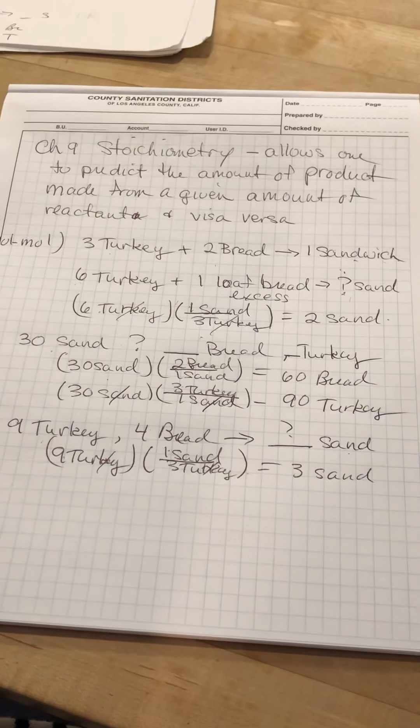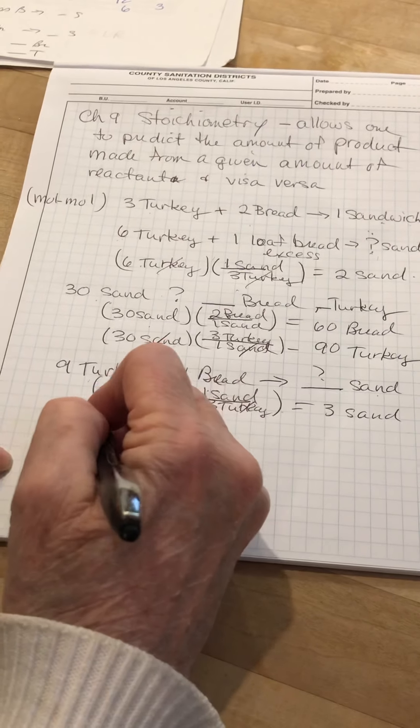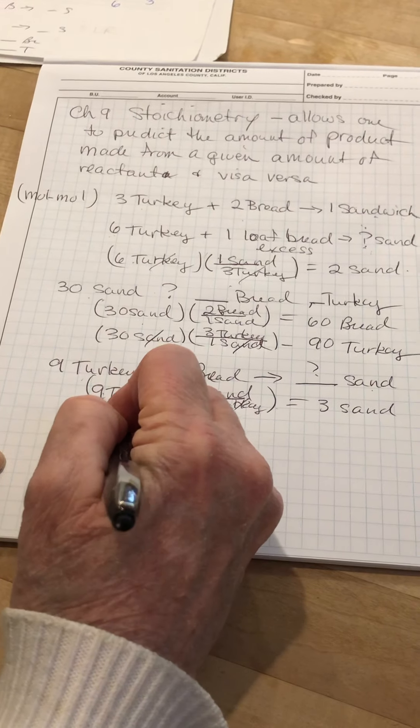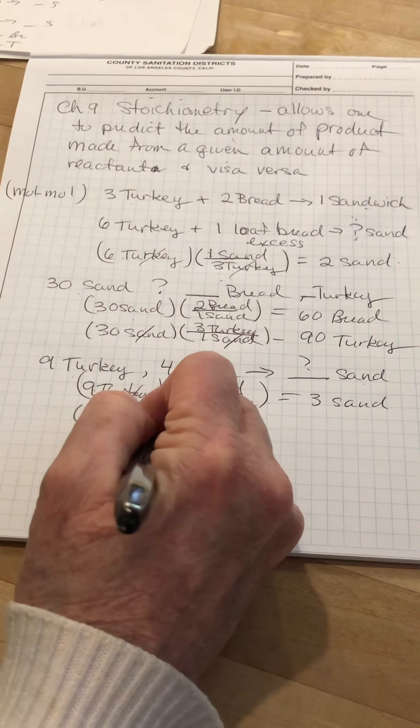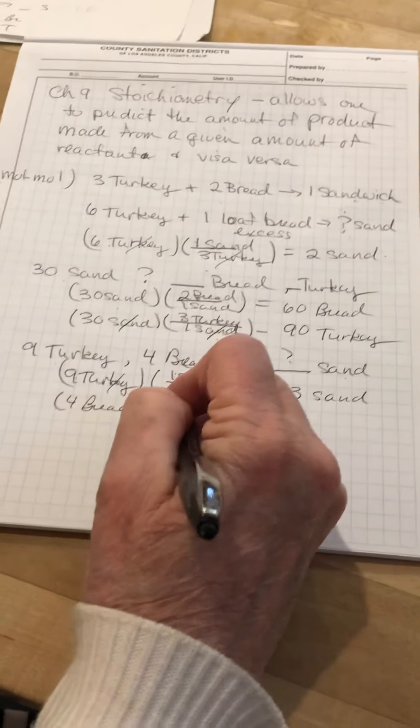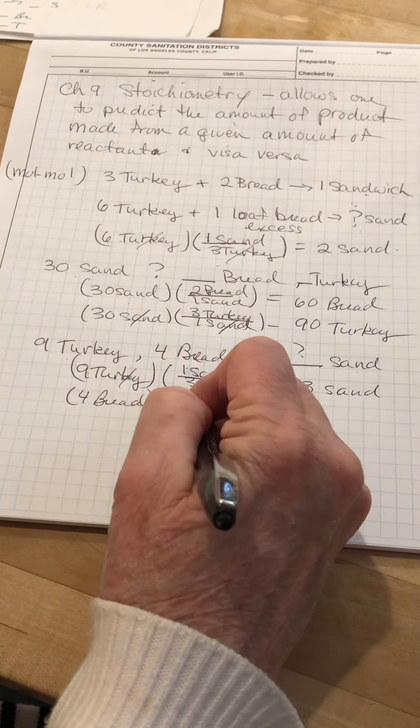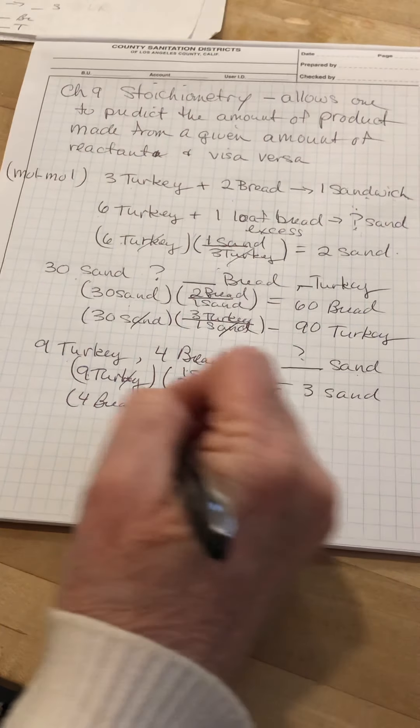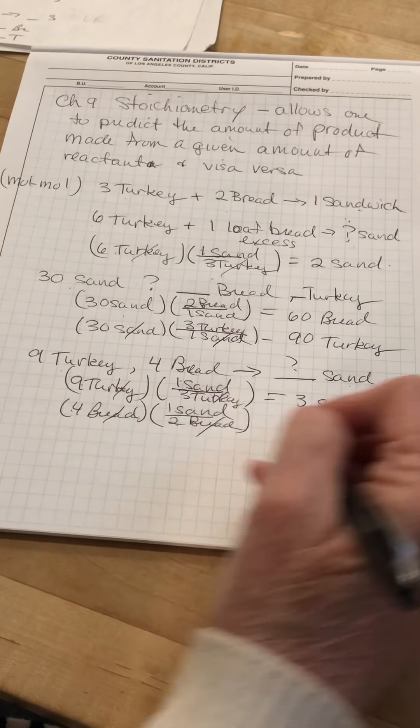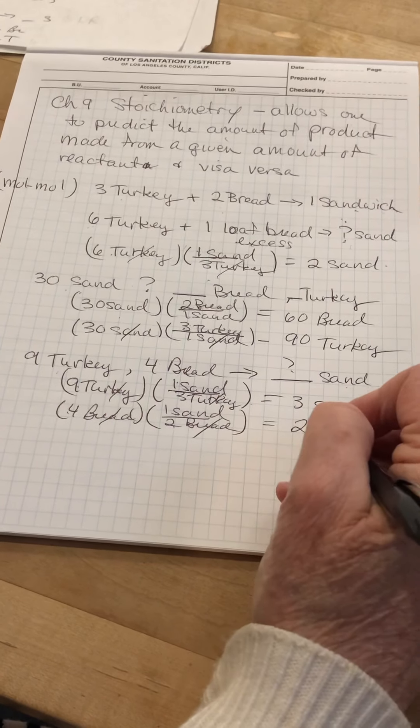Now let's see how many sandwiches we can make with the bread. We have four slices of bread. One sandwich. One sandwich can be made with every two slices of bread. Bread cancels. Four divided by two is two sandwiches.